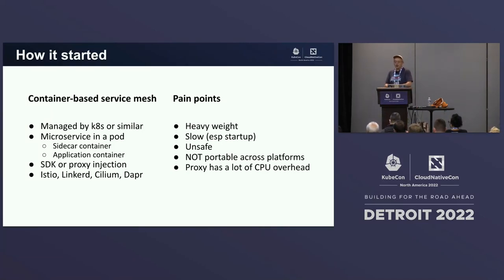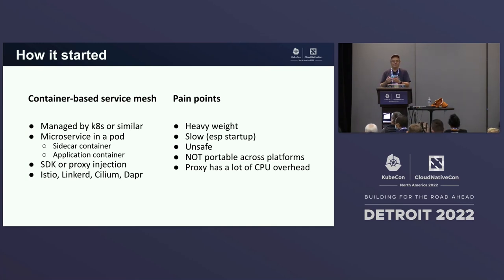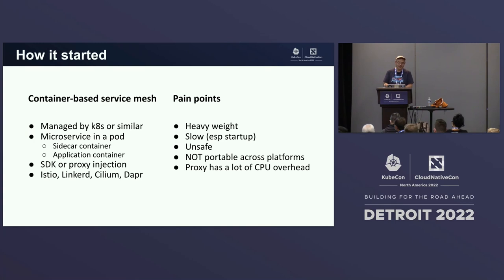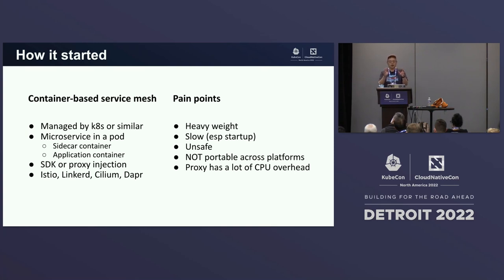Let's look at a typical Cloud Native application — say, a service mesh that is container-based today. You'd have your application written in a language like Go, Rust, or Java. You compile that and have a runtime, package it into a Linux container, and have the containers managed by Kubernetes. In the Kubernetes world, in a service mesh, you have microservices in a pod where each pod has two containers: one is a sidecar, the other is an application container. There are many technologies you can use to manage this infrastructure — what we call container-based architecture.